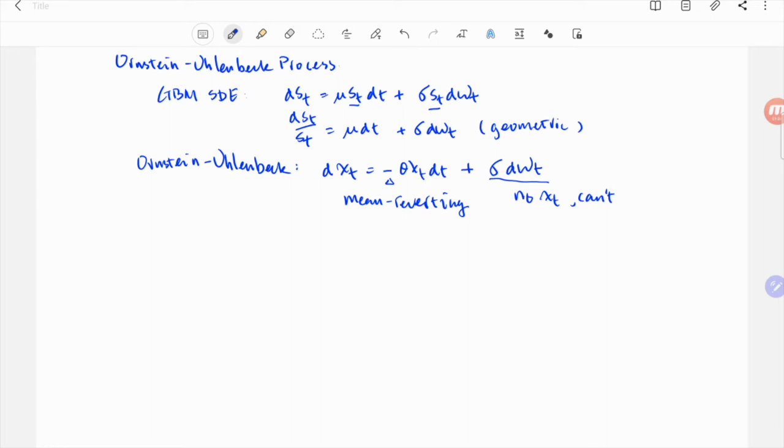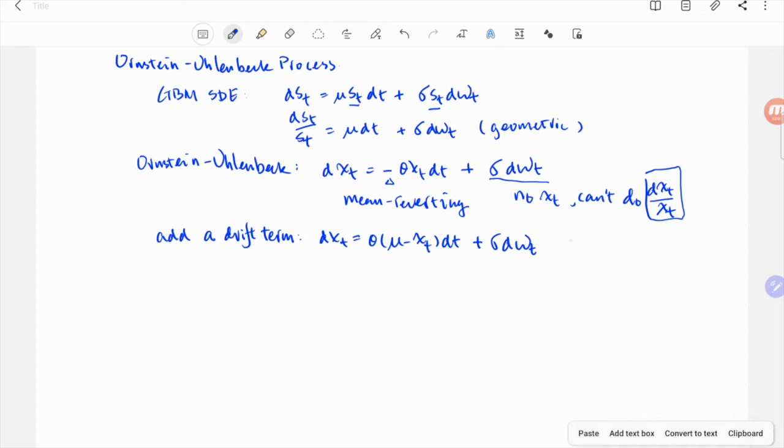In the second term, there's no x_t, so we cannot move x_t to the left totally to form dx_t over x_t. So we cannot solve it in a similar way as geometric Brownian motion SDE. To follow the convention, we'll also add a drift term mu here. We want to note this is exactly the Vasicek interest rate model.